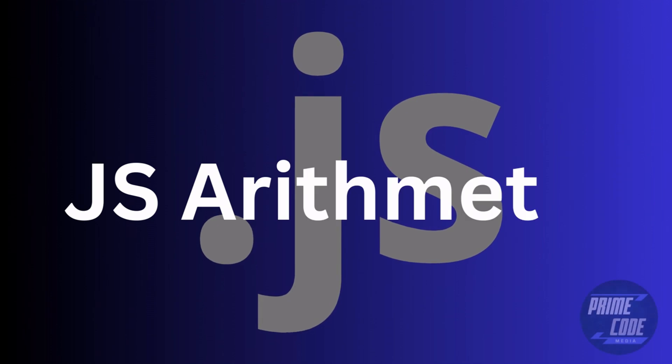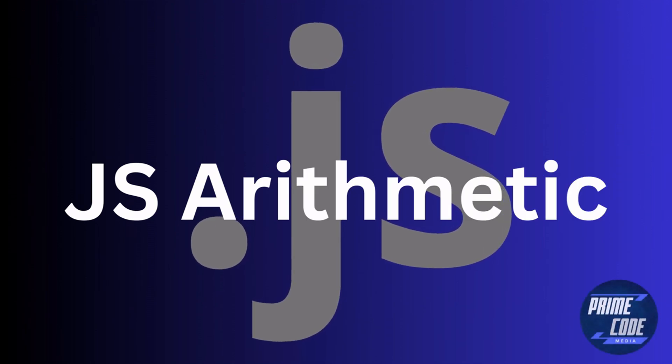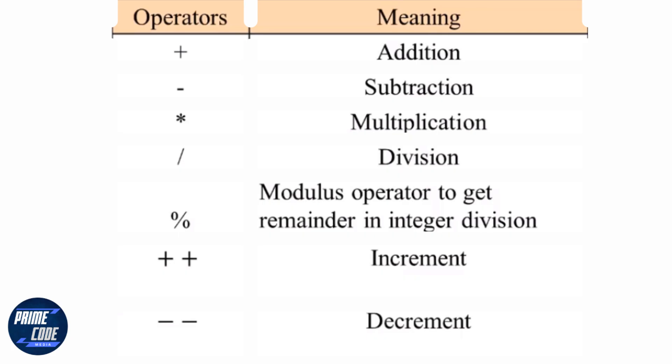Hello and welcome to another episode of our JavaScript series. In this video I'll be discussing JavaScript arithmetic. Let's start with JavaScript arithmetic operators which perform arithmetic on numbers. We use the subtraction operator to subtract, the asterisk as the multiplication operator, the forward slash as a division operator, the percentage sign as the modulus operator. I'll explain this operator in much detail shortly.